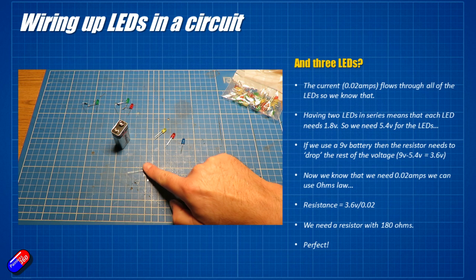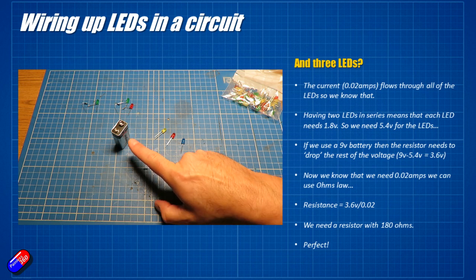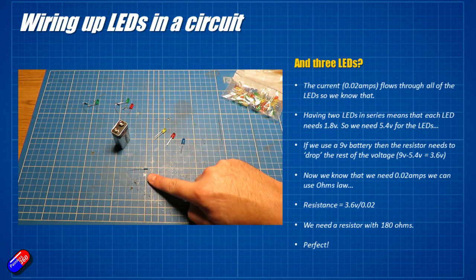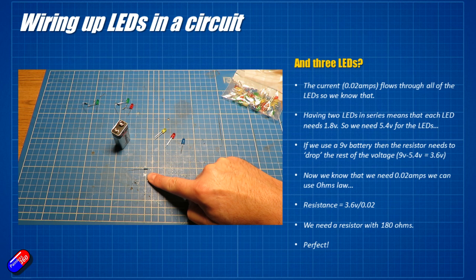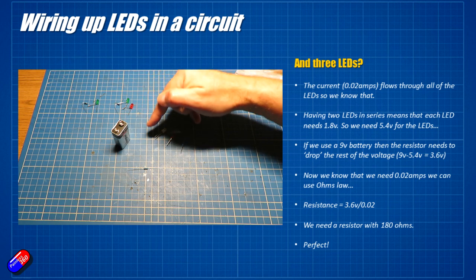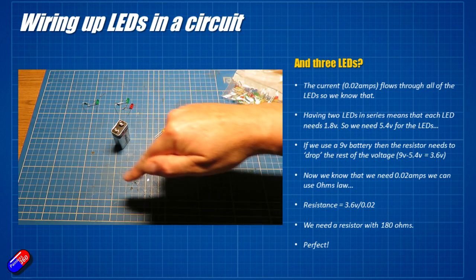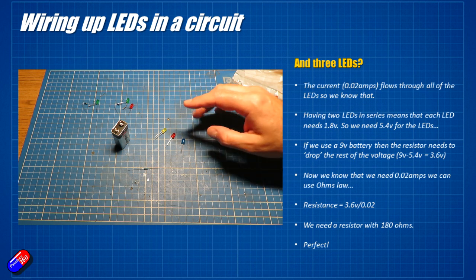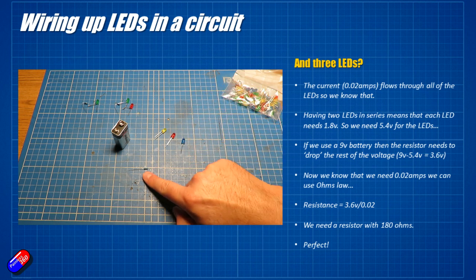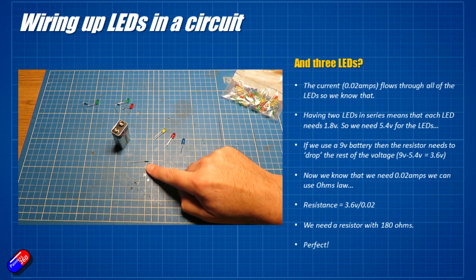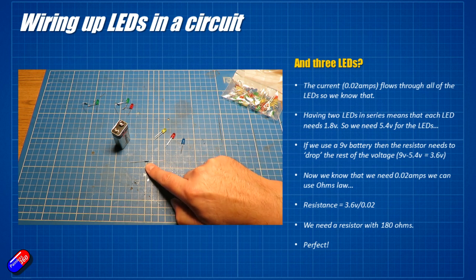So we need to drop the rest of that 9 volts over the resistor. So if we have 9 volts minus the 5.4 that we need for the LEDs, that means that this resistor needs to drop 3.6 volts. Again we know it's 20 milliamps because it's going to flow through each of these LEDs in a circuit. So we can actually put this together again. So if we divide the 3.6 volts that this resistor needs to drop with the current that we need to go through the circuit, which is 20 milliamps, we get 180 ohms and that's what this resistor is.